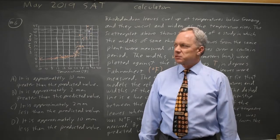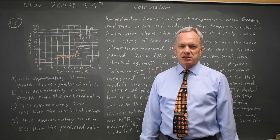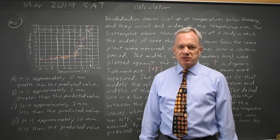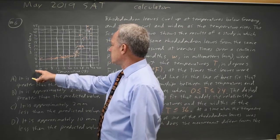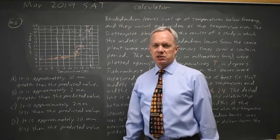This is calculator question number six from the May 2019 SAT. The College Board gives us a scatter plot showing the width of rhododendron leaves against the temperature at which those widths were measured.